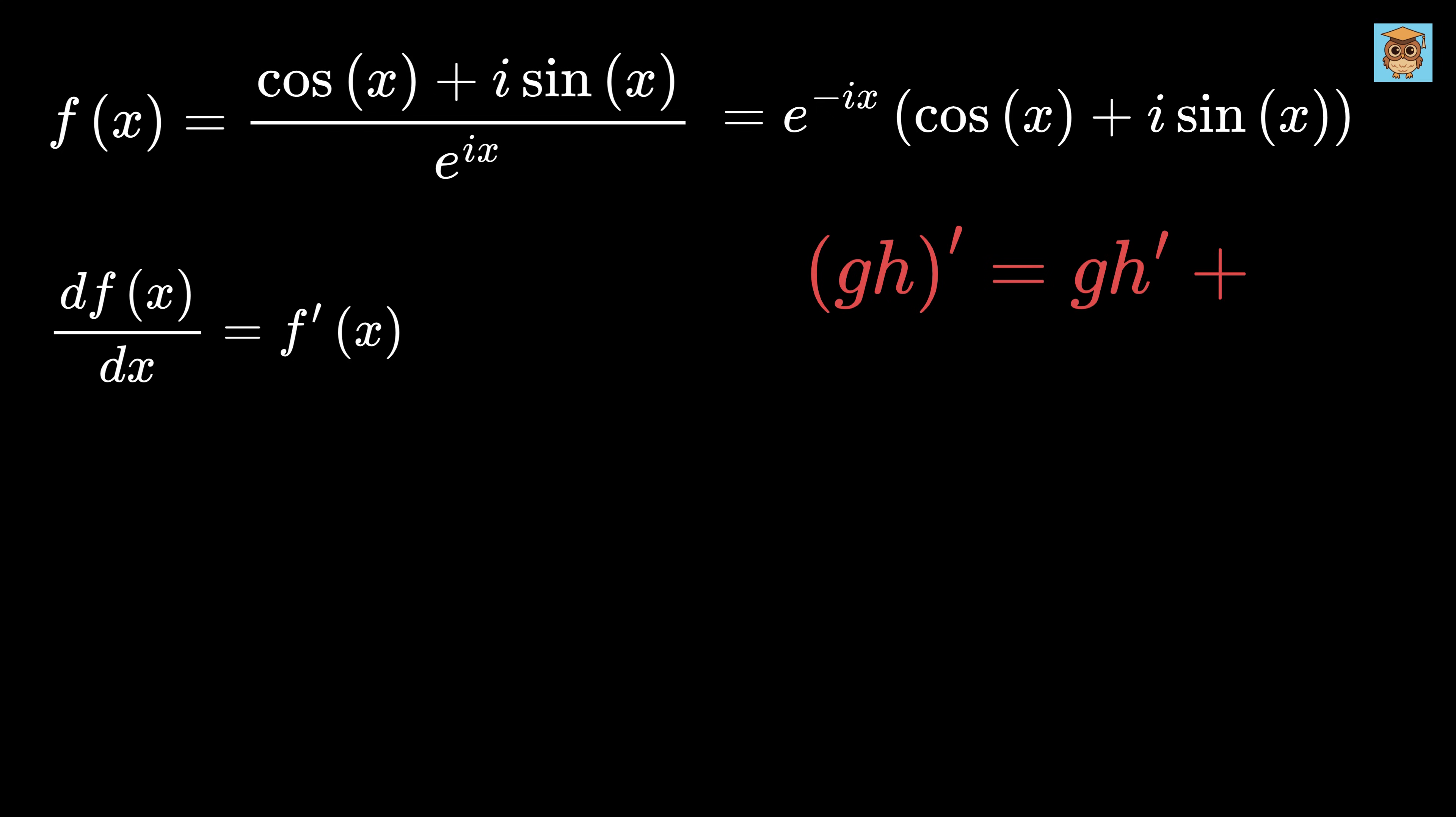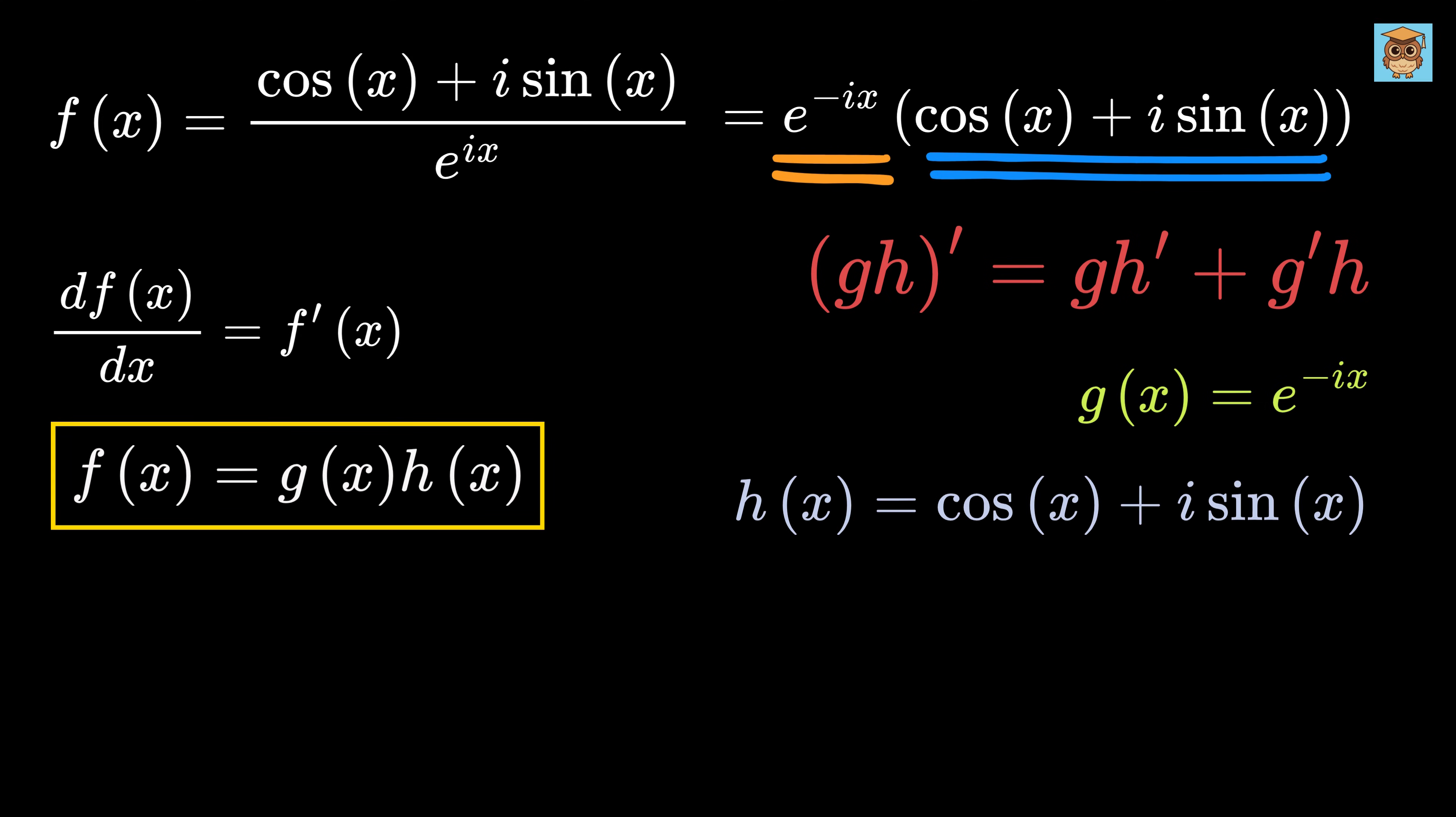So if we take g(x) as e to the minus ix and h(x) as this one, then f(x) equals g(x) times h(x).